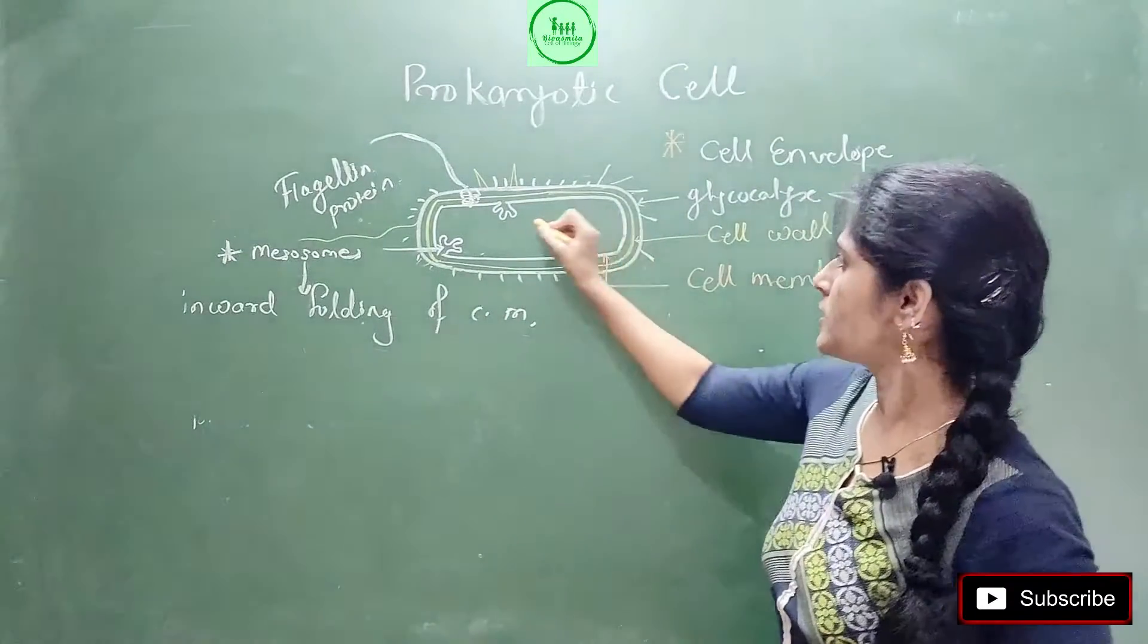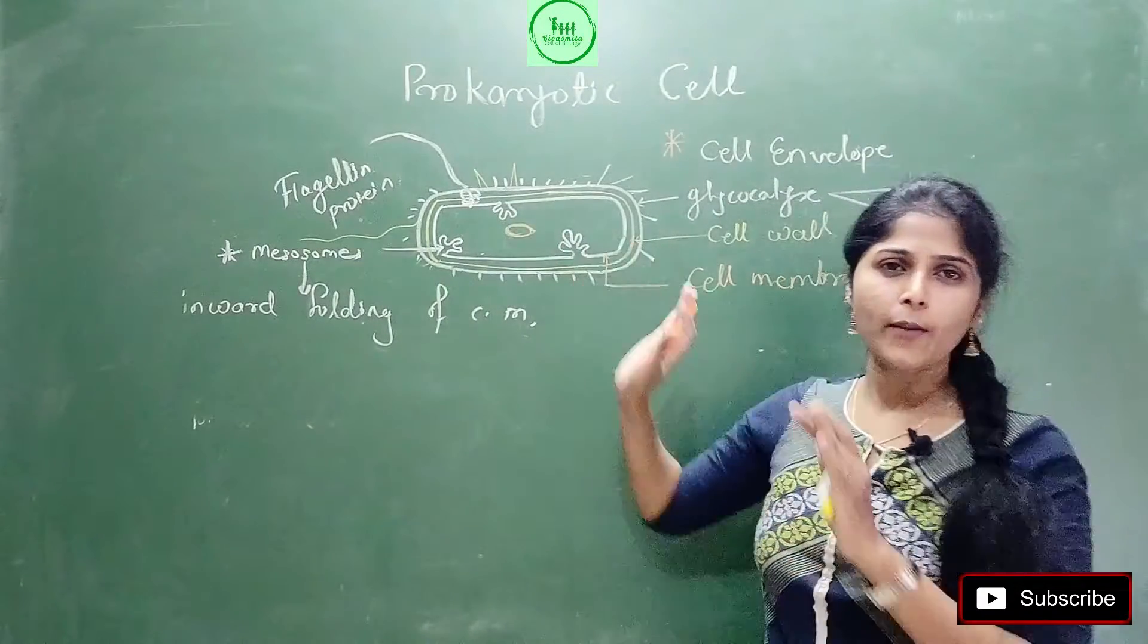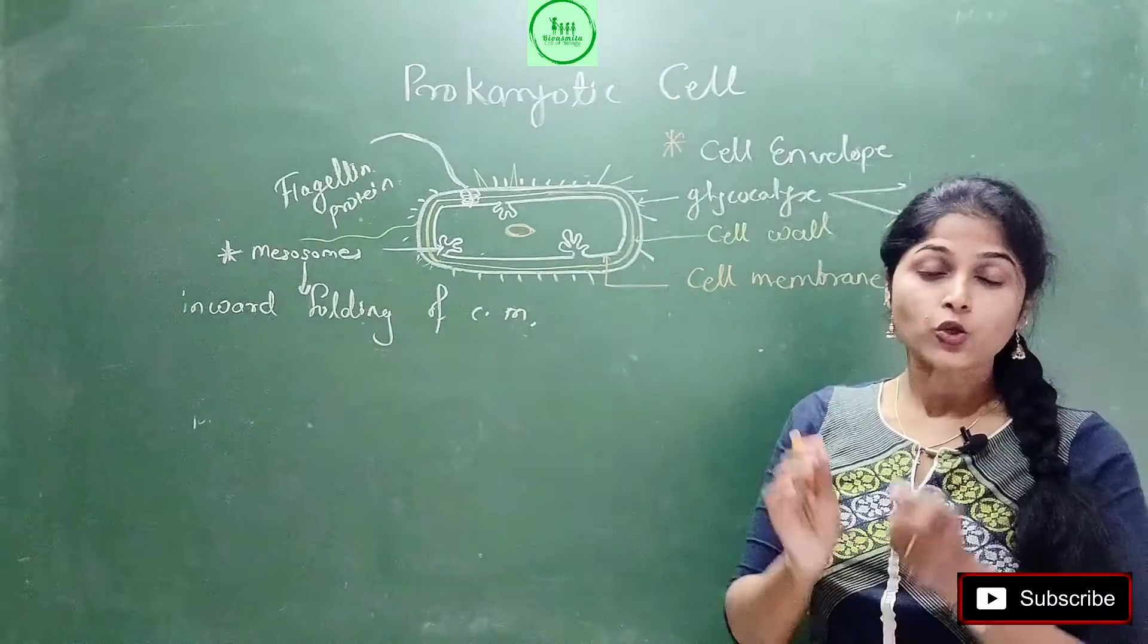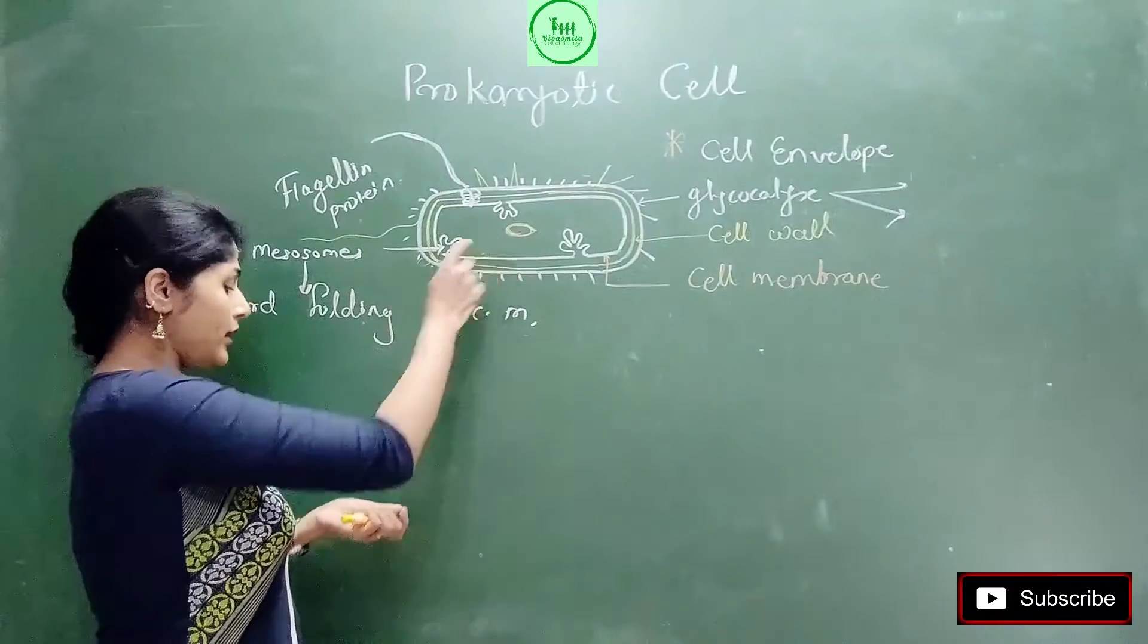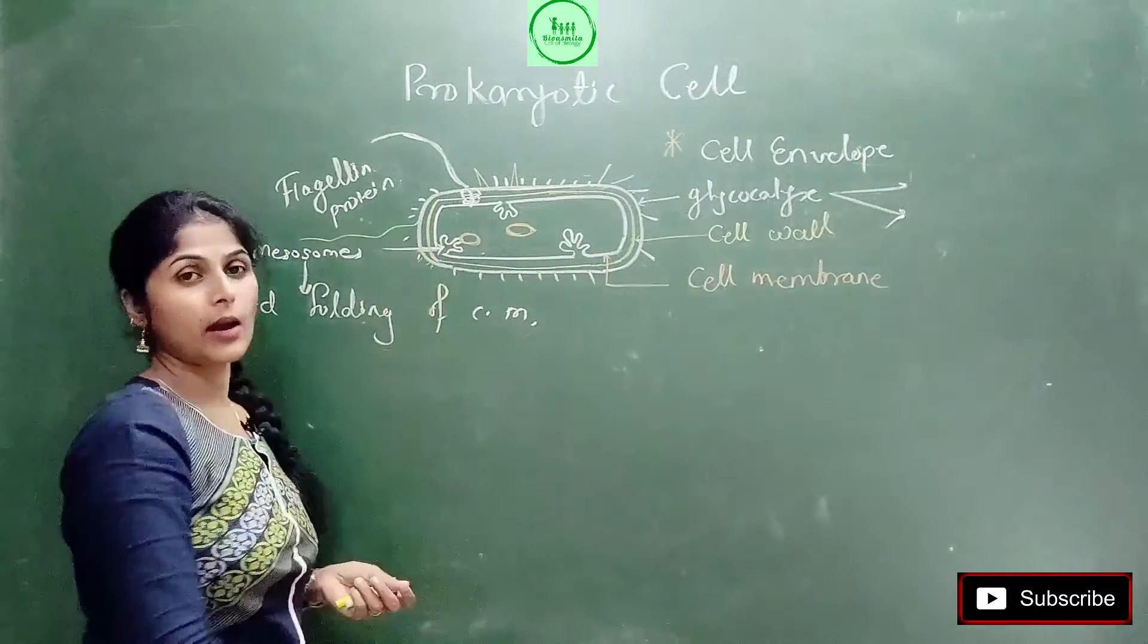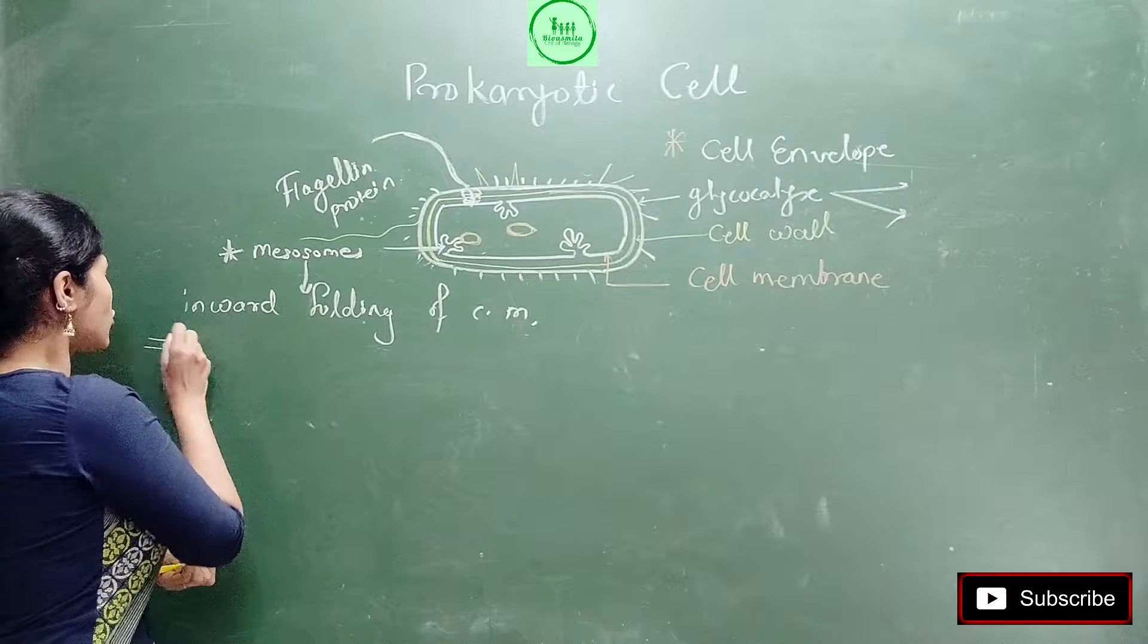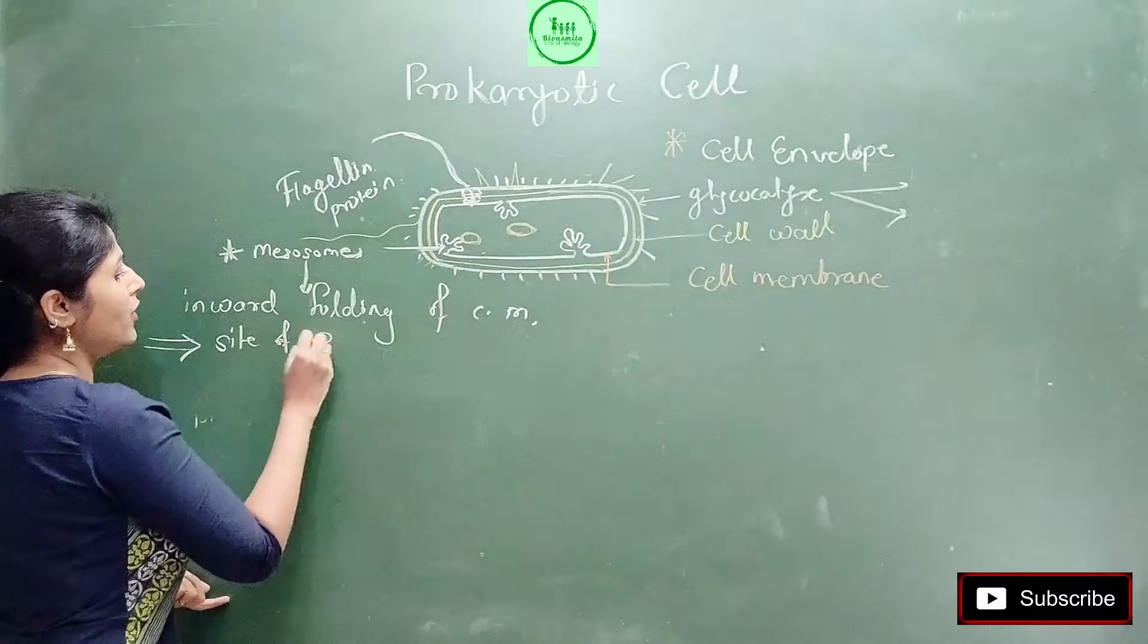But here in prokaryotic cell, what happens? Suppose here circular DNA is there. So generally it is here. But whenever one cell is going to divide, when a new cell will form, there is a need of new DNA. So at that time, at the time of DNA replication, this DNA, this DNA goes and attaches to the mesosome. Where does it attach? It goes and attaches to the mesosome.